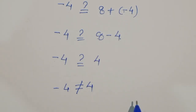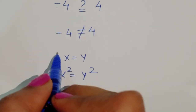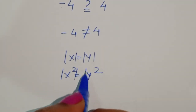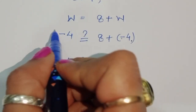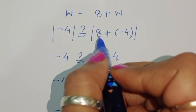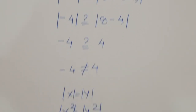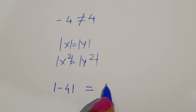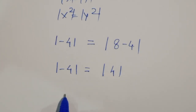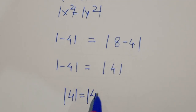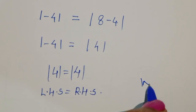However, we know that if x = y, then x² = y², meaning the absolute value of x equals the absolute value of y. Taking absolute values: |√(-4)| = |8 + (-4)| gives us |−4| = |4|, so 4 = 4. Therefore LHS equals RHS, and w = -4 is the correct solution when using absolute values.